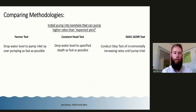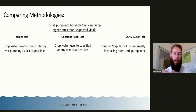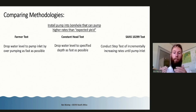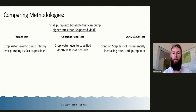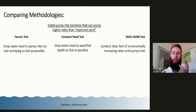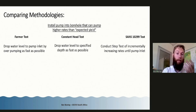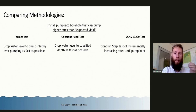In the pharma test, what is essentially done is the water level is dropped to pump inlet as fast as possible. In a constant head test, the main distinction is just that it's pumped to a specified level as fast as possible. Whereas in SANS 10299 testing, we're normally talking about doing a step test first, or even a calibration test before that, to look at what the water level starts doing at different pumping rates.